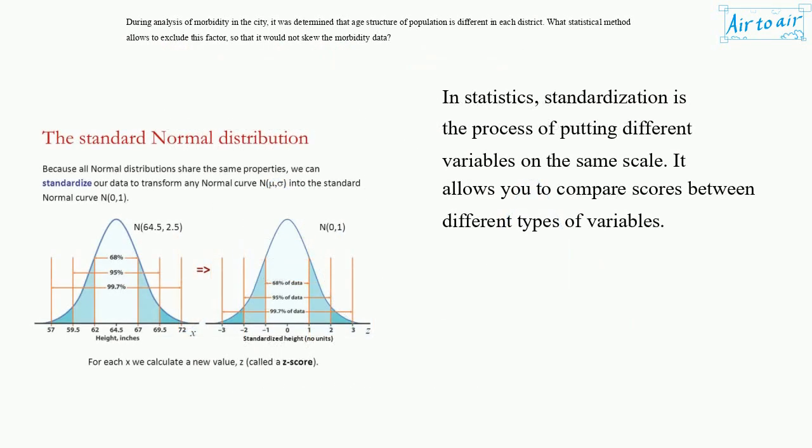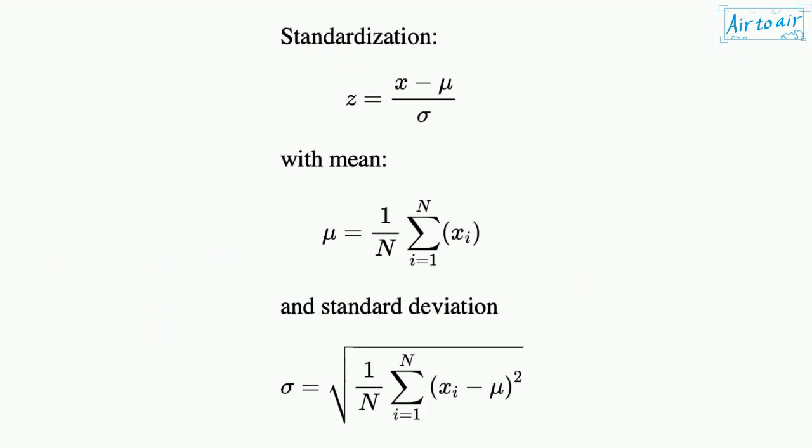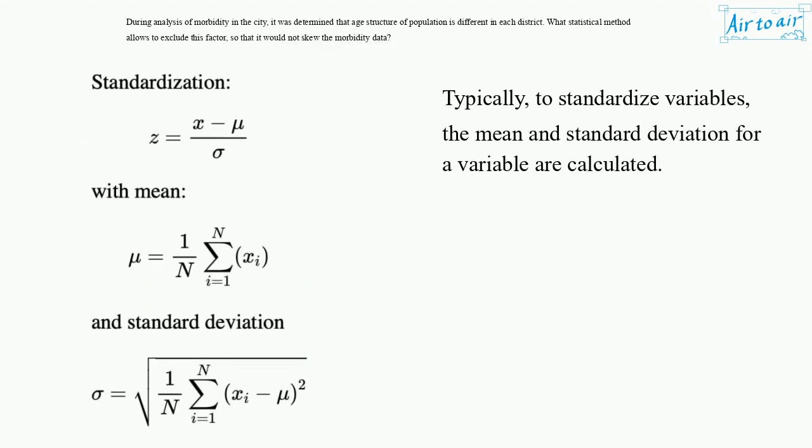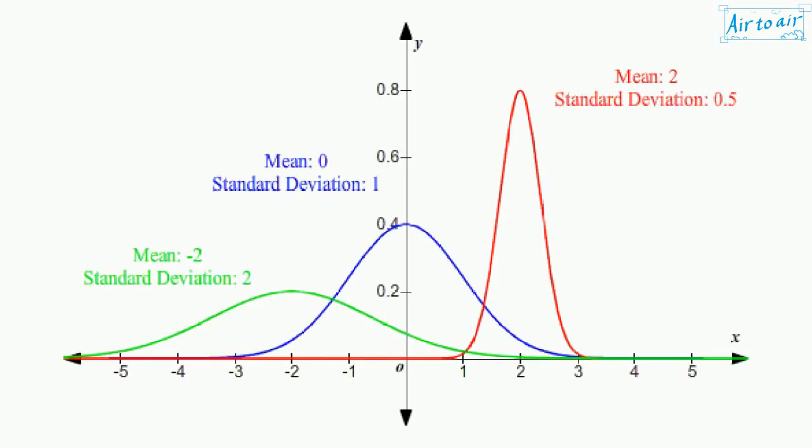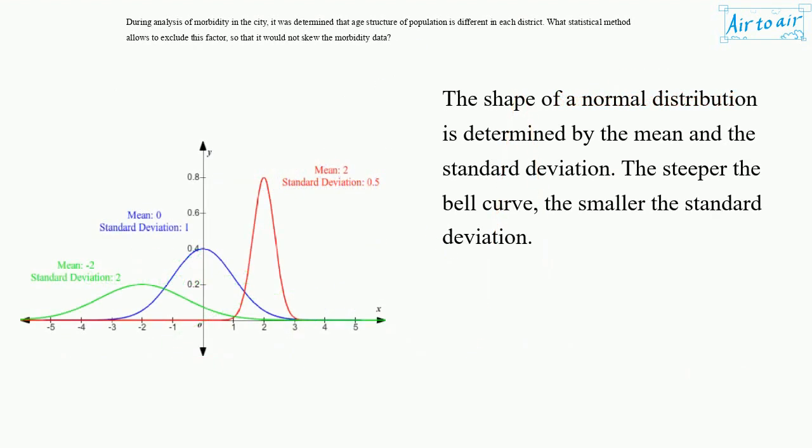In statistics, standardization is the process of putting different variables on the same scale. It allows you to compare scores between different types of variables. Typically, to standardize variables, the mean and standard deviation for a variable are calculated. The shape of a normal distribution is determined by the mean and the standard deviation. The steeper the bell curve, the smaller the standard deviation.